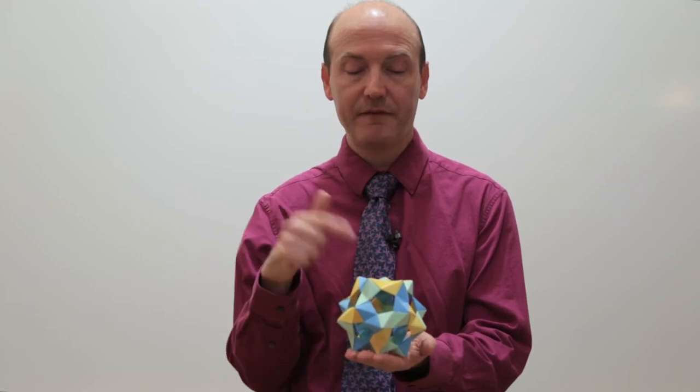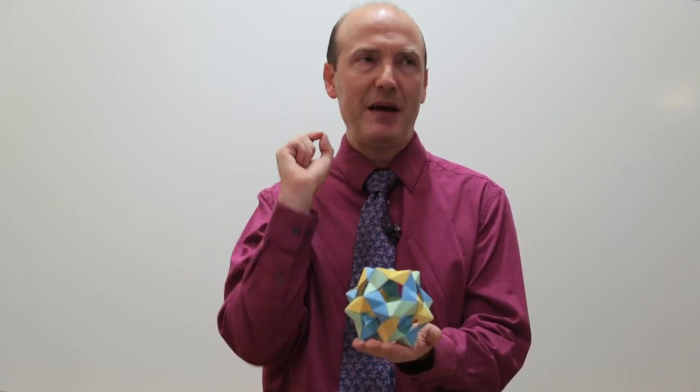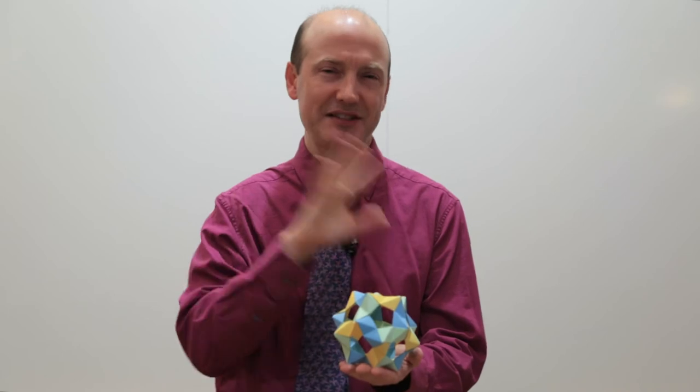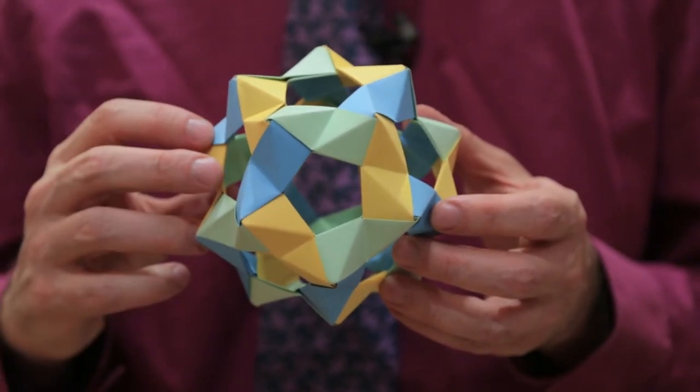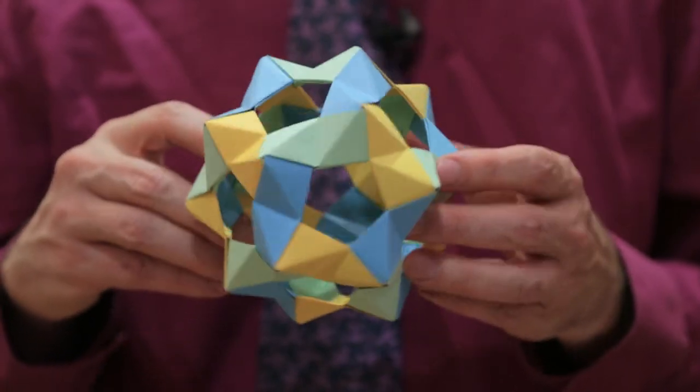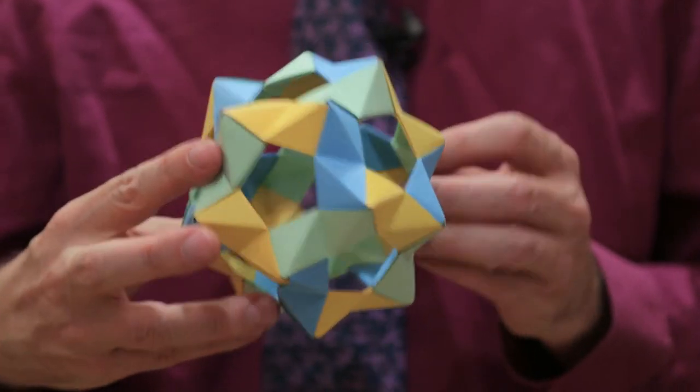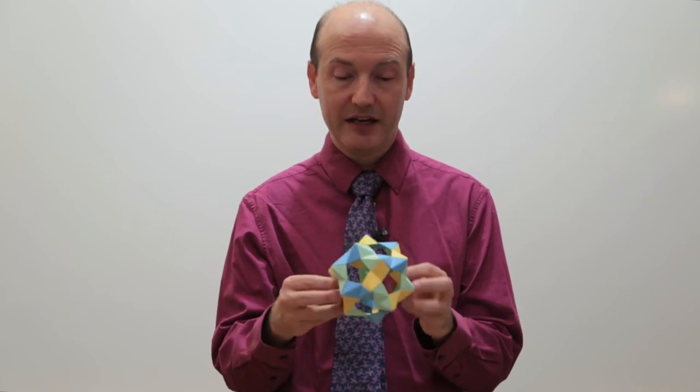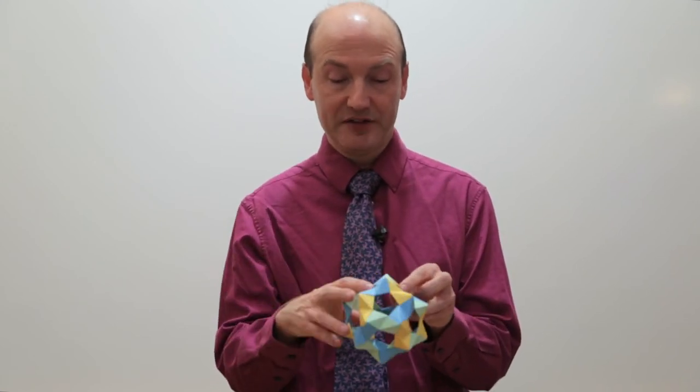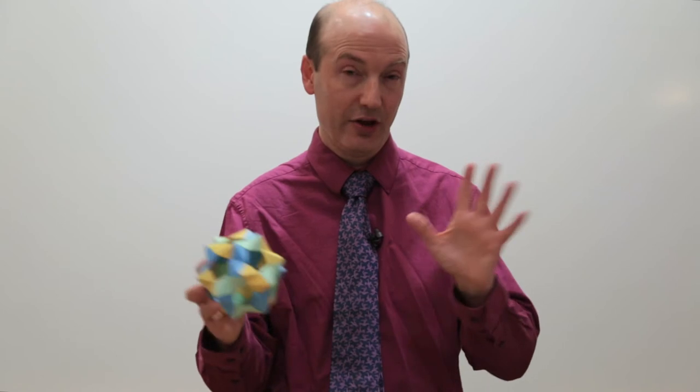So this is basically a dodecahedron made from 30 units of paper. This is made out of something called the PHYS unit. It stands for Pentagon Hexagon Zigzag Unit. And that describes kind of how the unit works. But as you can see it makes lots of pentagon holes. And that's what allows it to make a dodecahedron. But the same unit can make other things. So 30 of them make this object. And that's kind of nice. I've actually colored it so that no two units have the same color touch. You can always do that. There's another theorem there.